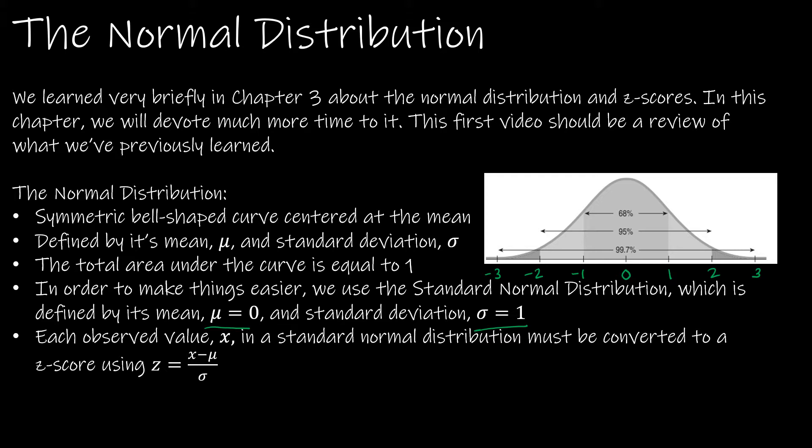So now what happens is whenever I have an observed value, I just have to use the z-score formula to turn it into a standard normal value. And that z-score formula is x, which is my observed value, minus μ, which is my original mean, divided by the standard deviation, which is my original standard deviation.